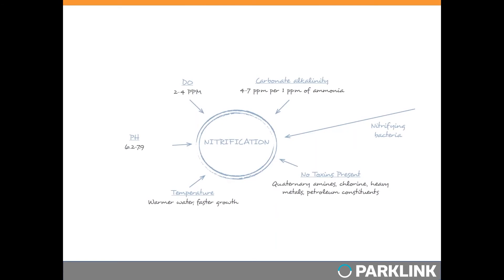We've touched on dissolved oxygen, carbonate alkalinity, and pH, and what happens when nitrifiers are lost through washout or toxicity. For plants with acute events where carbonate alkalinity, dissolved oxygen, and pH are all in good ranges, it's usually simple to get nitrification back by adding additional nitrifying bacteria. For plants with chronic issues, we work with them to figure out which parameter is causing the ongoing condition — it may actually be several different conditions.